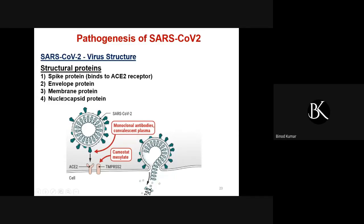There are other proteins: the envelope protein, the membrane protein, and the nucleocapsid protein. The envelope protein helps in the assembly of the virus; the membrane protein also helps in assembly; the nucleocapsid protein plays a crucial role interacting with the RNA packaging signal, helping assemble the virus with the RNA genome, which is then exocytosed from the cell. There is also TMPRSS2, a serine protease that plays an important role in activating spike proteins so they can bind properly to ACE2 and make entry through either endocytosis or direct membrane fusion.